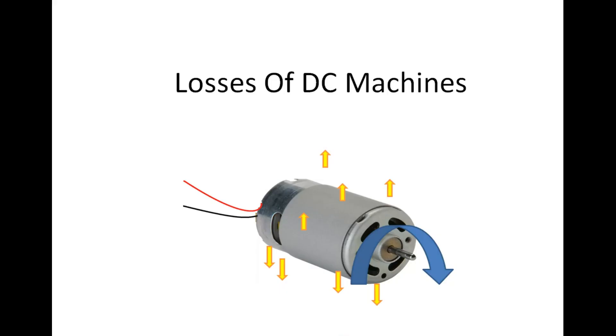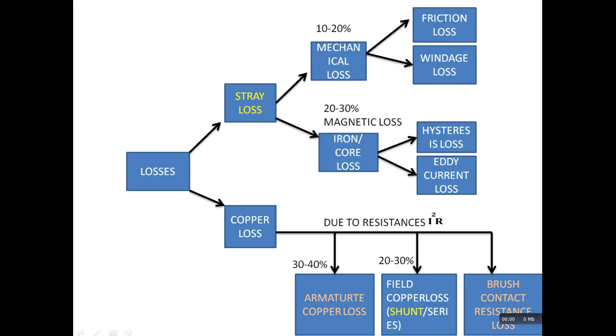Losses of DC machines. DC machine losses are divided into copper losses and stray losses. Stray losses are further divided into iron losses and mechanical losses. Mechanical losses consist of friction loss and windage loss.